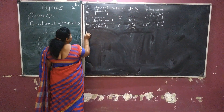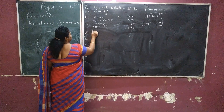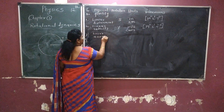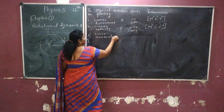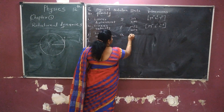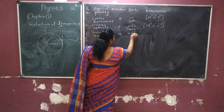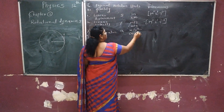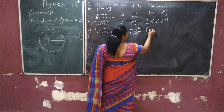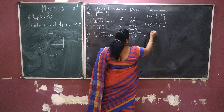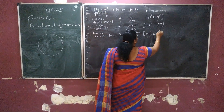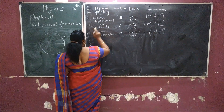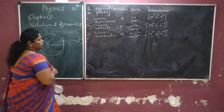The third quantity is linear acceleration, denoted by A. Its unit is meter per second square in the MKS system, and centimeter per second square in the CGS system. Hence the dimension is M⁰, L¹, T⁻². These are all the quantities in linear motion.